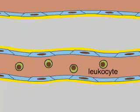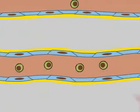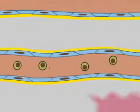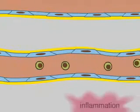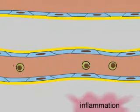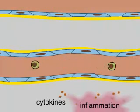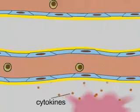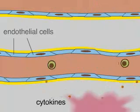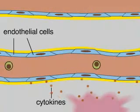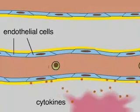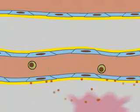Leukocytes are white blood cells that help fight infection. At sites of injury, infection, or inflammation, cytokines are released and stimulate endothelial cells that line adjacent blood vessels.